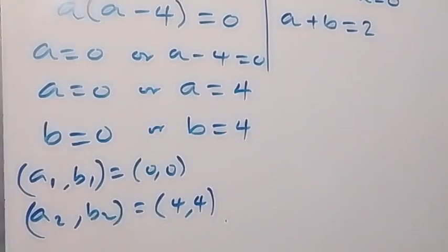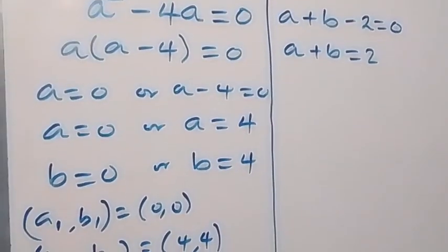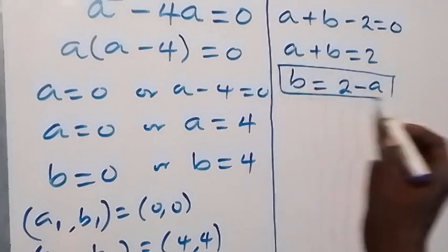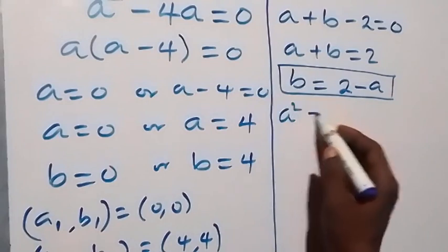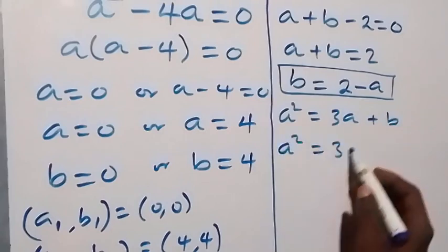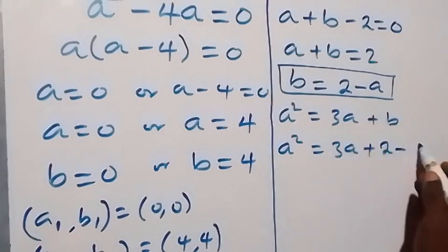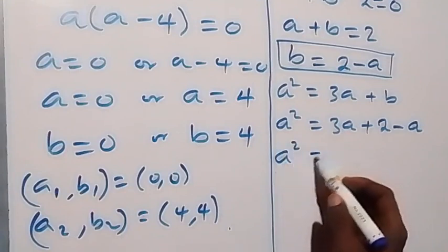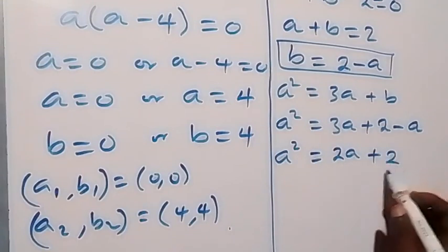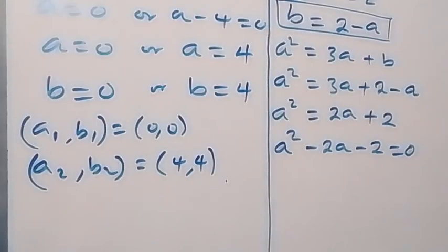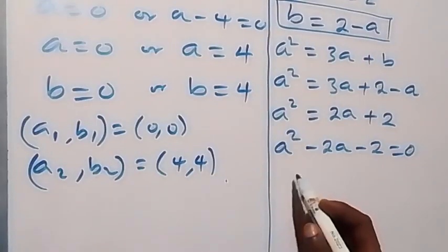For the case a plus b equals 2, it implies b equals 2 minus a. Substituting into equation 1 — a squared equals 3a plus b — we replace b with (2 minus a): a squared equals 3a plus 2 minus a, which is a squared equals 2a plus 2. Bringing everything to one side: a squared minus 2a minus 2 equals 0. This gives us a quadratic equation, and let's solve it with the quadratic formula.